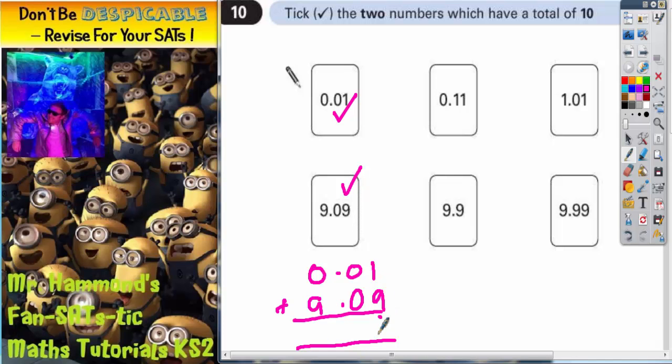So 1 plus 9 is 10, put your 0 and carry your 1. 0 plus 0 plus 1 is 1, don't forget your decimal point. 0 plus 9 is 9. So actually these two added together give us 9.10 which is not a total of 10, so it can't be these two.